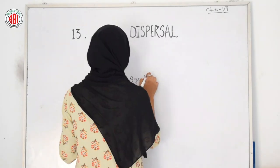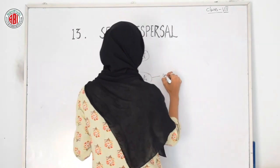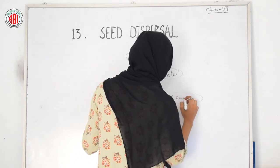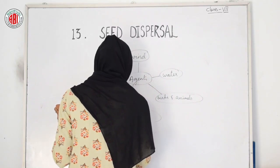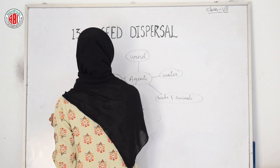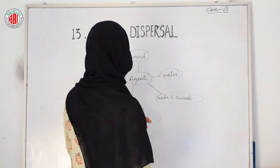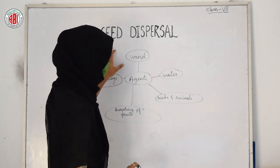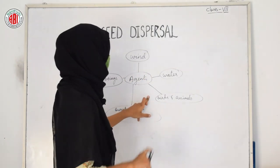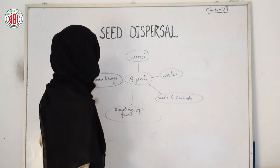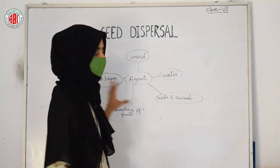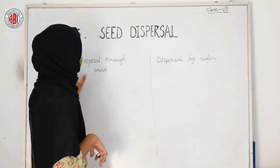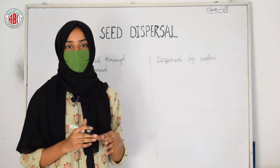Seed dispersal can take place by many means. There are five agents by which seed dispersal takes place: first, dispersal through wind; second, dispersal by water; third, dispersal by birds and animals; fourth, dispersal by bursting of fruit; and fifth, dispersal through human beings.